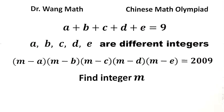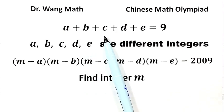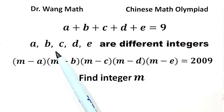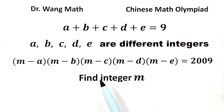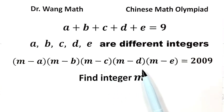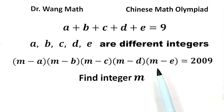In this video, we can solve a question from the Chinese Math Olympiad. Given a plus b plus c plus d plus e equals 9, and a, b, c, d, e are different integers. Given this equation, (m minus a)(m minus b)(m minus c)(m minus d)(m minus e) equals 2009, then solve the equation for integer m.